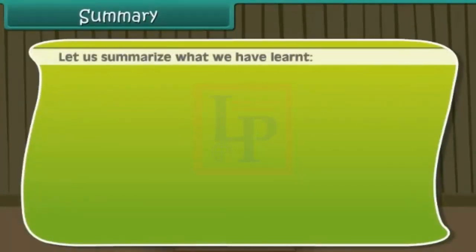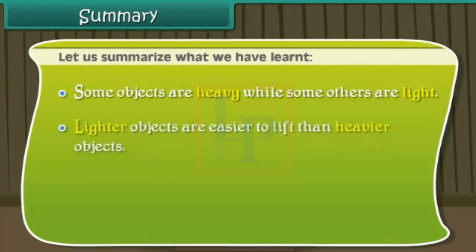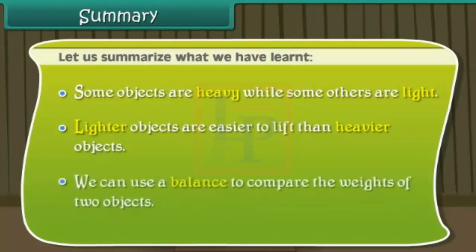Let us summarize what we have learnt. Some objects are heavy, while some others are light. Lighter objects are easier to lift than heavier objects. We can use a balance to compare the weights of two objects.